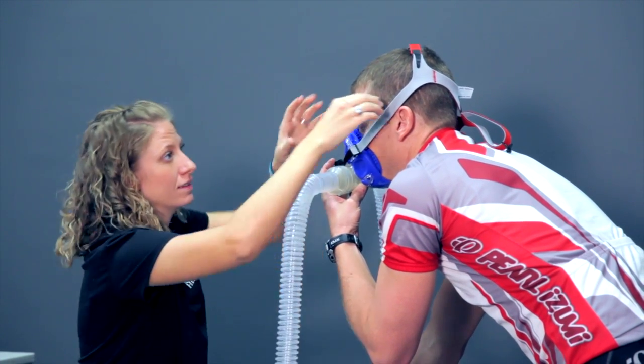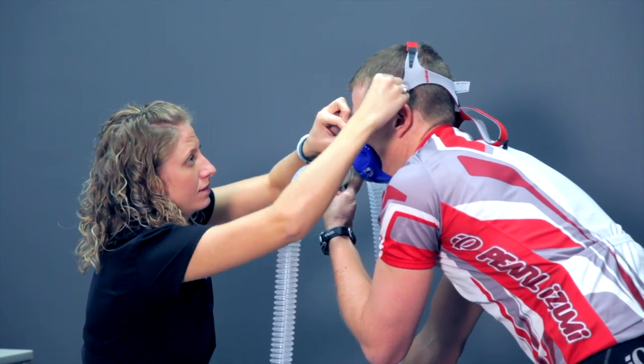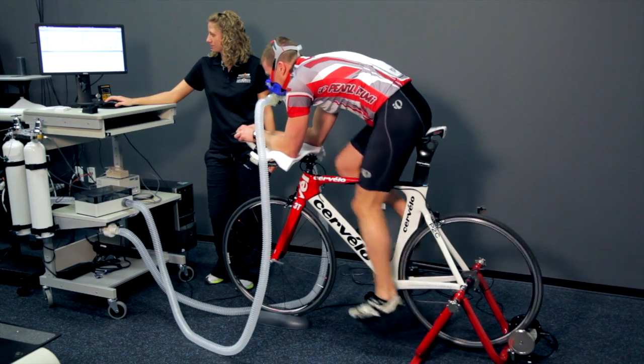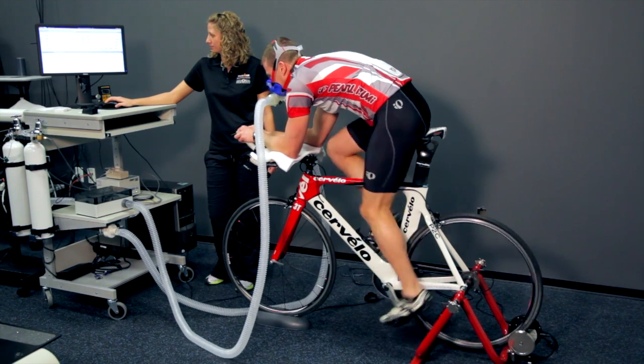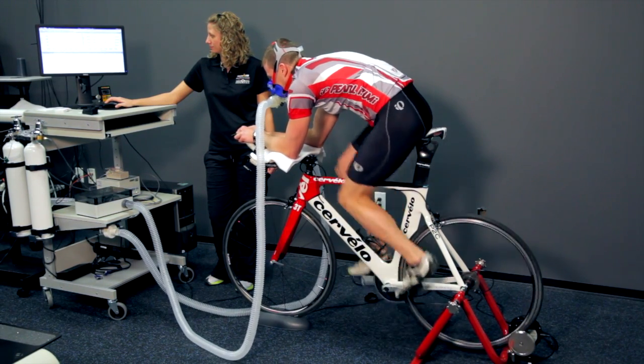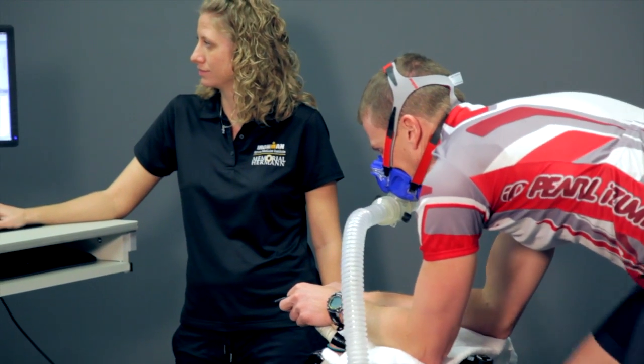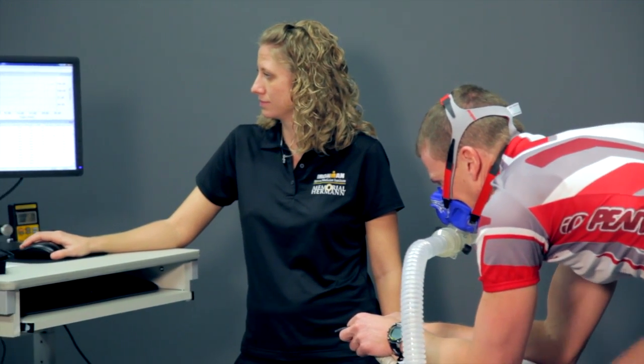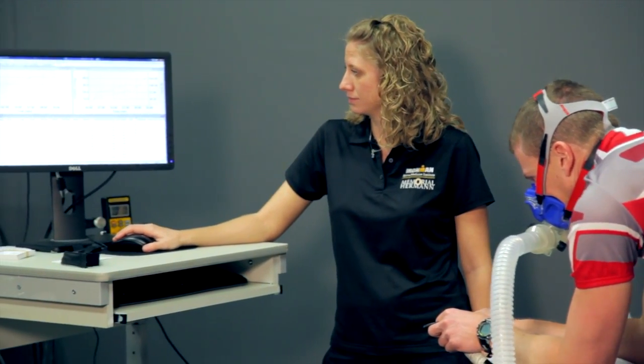We're taking the same oxygen consumption, CO2 production data along with heart rate that we are for a VO2 max test, but the stages are much longer and we're using the information to figure out how many calories the athlete's burning rather than just give them a VO2 max number.